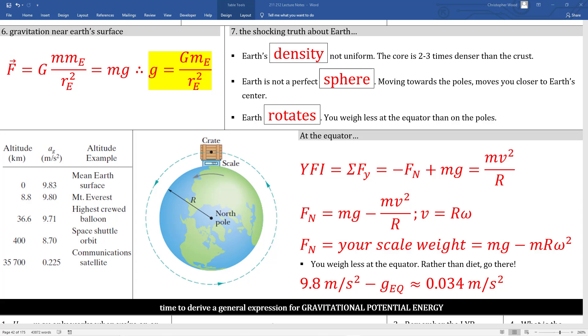You can see one way to lose weight is to climb to the top of Mount Everest or take a really high flying balloon, or even better, get yourself into a low earth orbit on some space shuttle or international space station. As mentioned, your weight on the equator is less than anywhere else. Here we apply the force analysis method and see that the g value on the equator is 0.034 meters per second squared less than 9.8 meters per second squared.